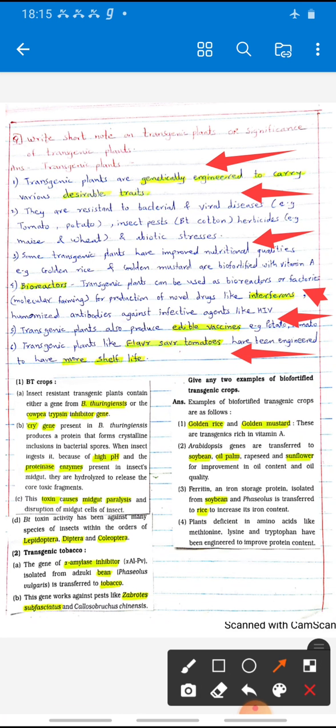Some crops like Bt crops which are used against different pests. Such Bt crops are also produced with the help of genetic engineering. These are transgenic plants.